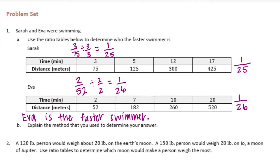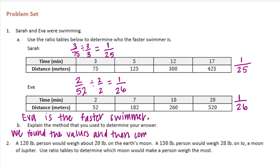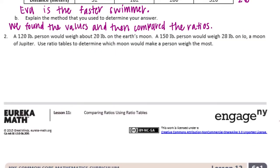So Eva is the faster swimmer, just barely. To explain the method used to determine the answer: we found the unit rates and then compared the ratios. Number 2: a 120-pound person would weigh about 20 pounds on Earth's moon.